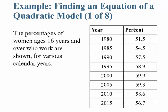The percentage of women ages 16 and over who work is shown for various years. In 1980, 51.5% of women 16 years or older worked. All the way up to 2000, it was 59.9%. Then by 2015, it dropped to 56.7% of women age 16 years or older working.